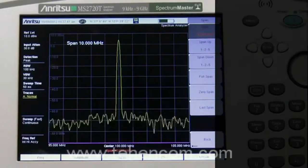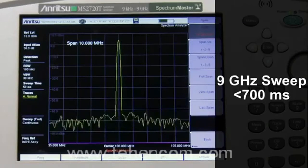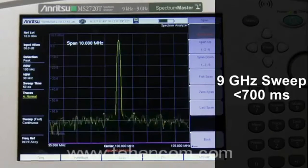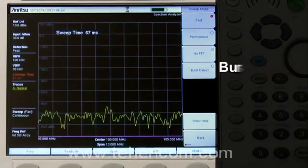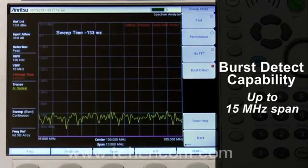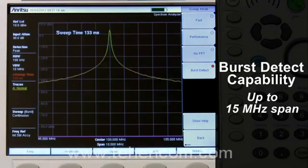Even faster sweep speeds than the previous generation, a 9 GHz sweep in under 700 ms. Burst detect for easily seeing radar or other bursty signals, now up to 15 MHz span.